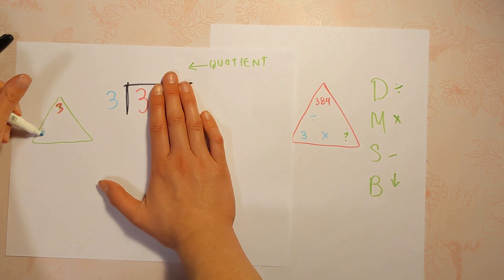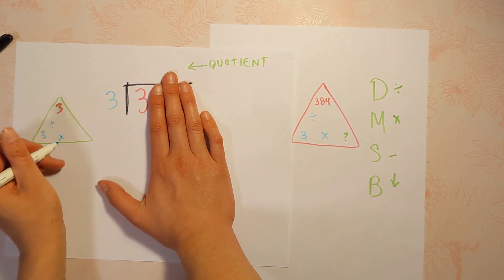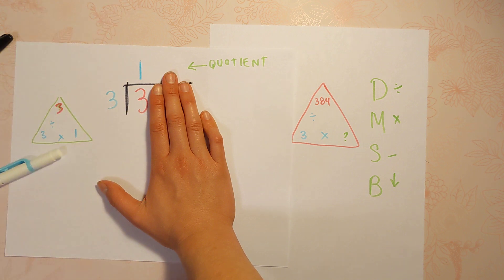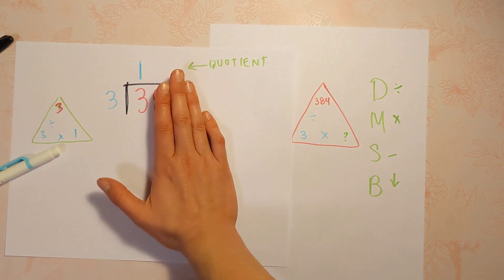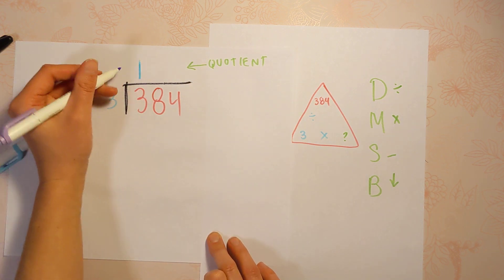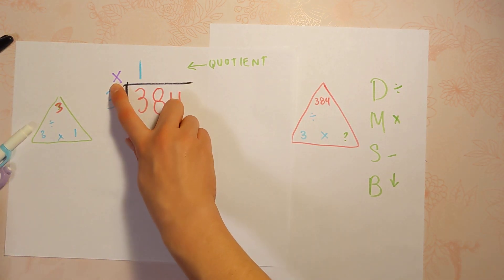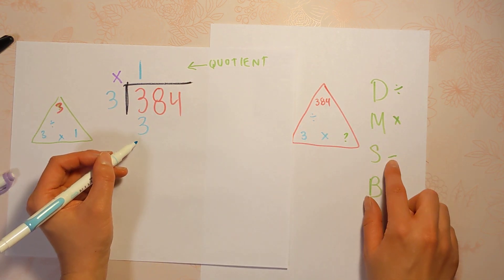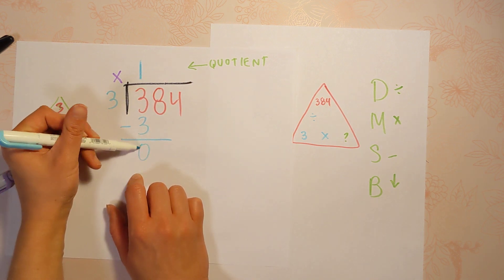We are going to do this 3 divided by 3, and we're trying to see how many times can this 3 fit into here. 3 divided by 3 is 1. Our next step is to multiply, so I like to put a little multiplication symbol right here to remind myself. 1 times 3 is 3 — we put it underneath. Next step is to subtract to see if there's anything left over, and there's nothing left over.